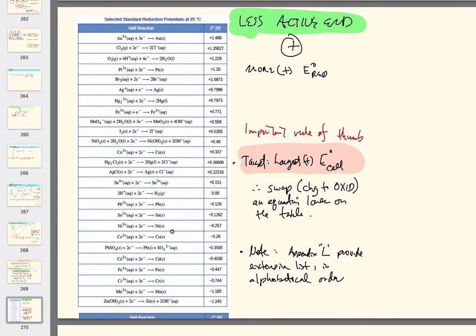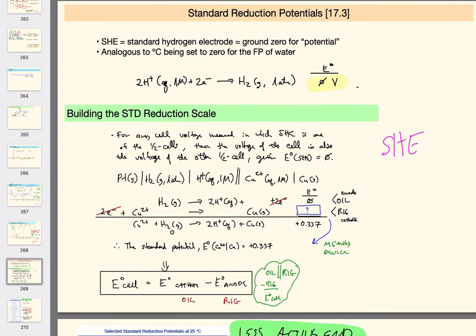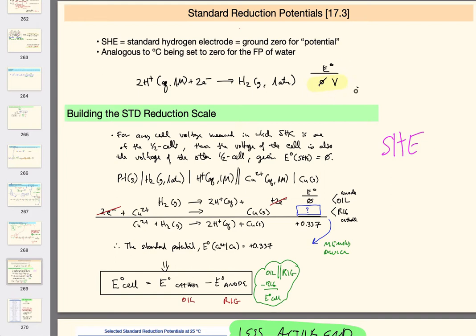There was actually some debate on that, and the world decided: if we're going to publish data — what's called standard reduction potentials — we have to agree on what we're going to do. The agreement is you're going to write as much as you can as half cells where you show electrons being lost or gained, and furthermore you're going to write them as reductions. That means you show how you make every metal from its ions, and those are called reduction potentials.